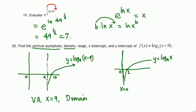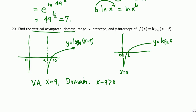For the domain: this log is defined only when its argument is positive. So x − 9 must be greater than 0, which means x must be greater than 9. The domain is all real numbers bigger than 9, or in interval notation, (9, ∞), since x = 9 is the vertical asymptote and any number greater than 9 is in the domain.